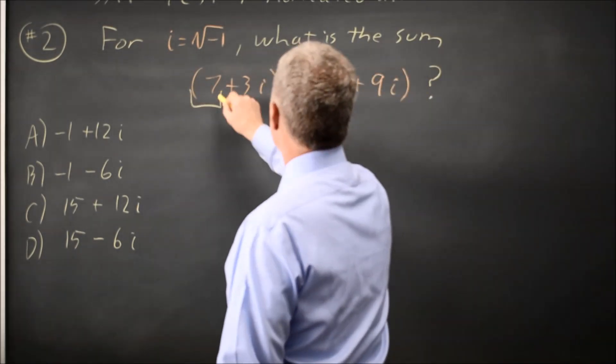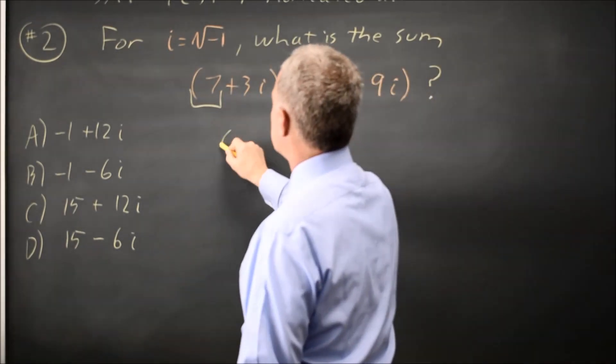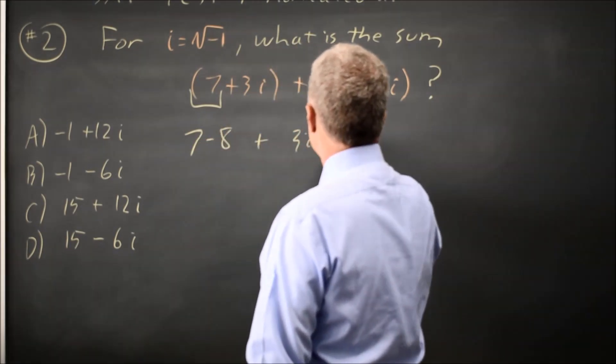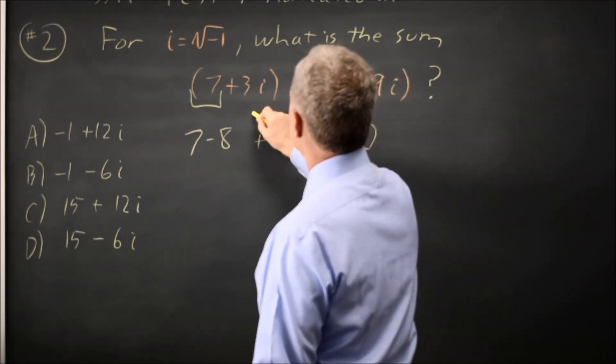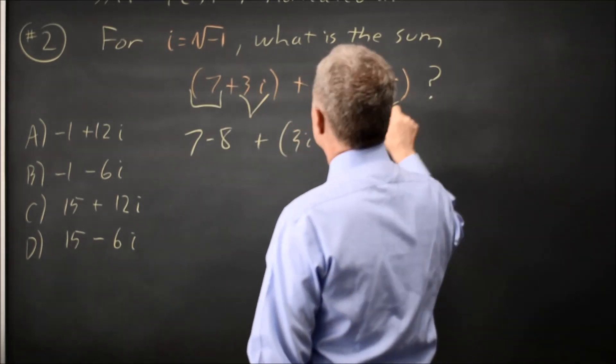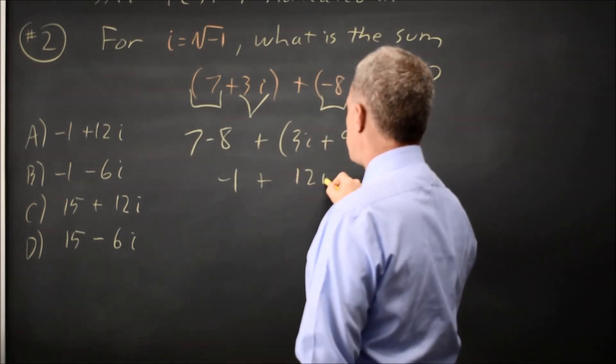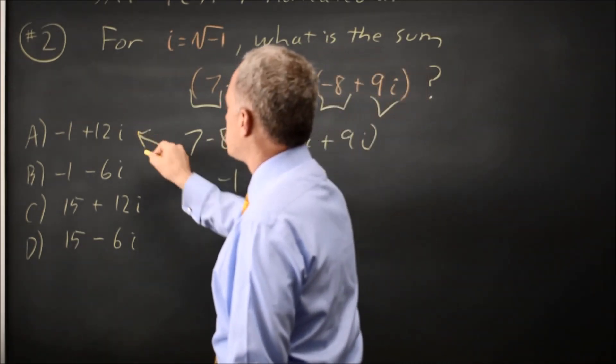But for adding we'll add 7 plus negative 8 and 3i plus 9i. 7 minus 8 is negative 1. 3i plus 9i is 12i. So the sum is choice A.